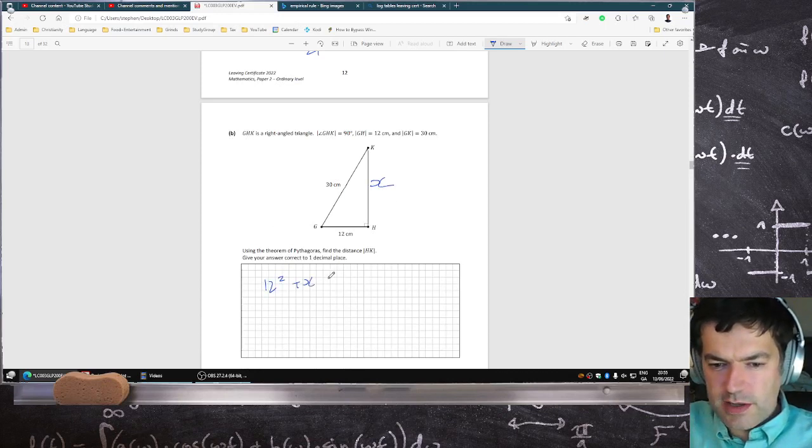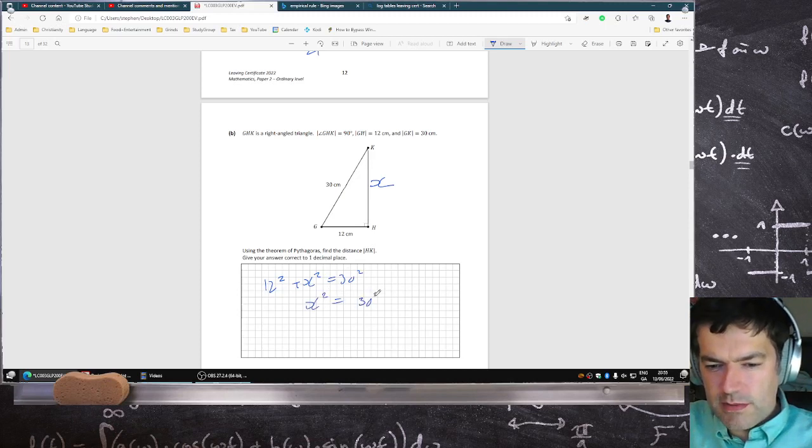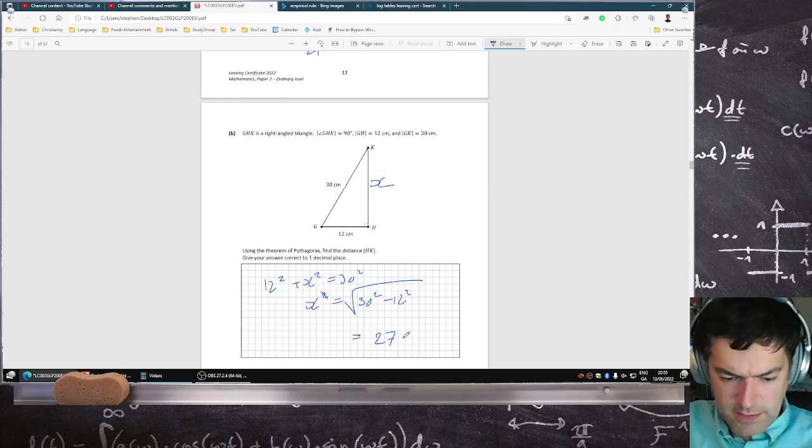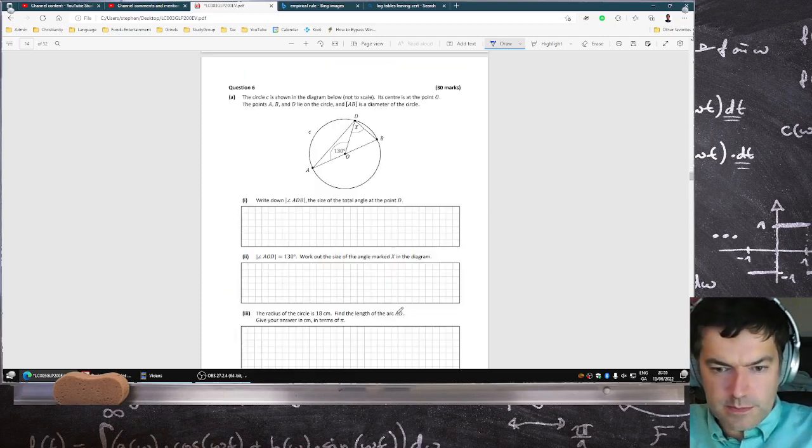...plus x squared equals 30 squared. So x squared equals 30 squared minus 12 squared, so x is the square root of that. To one decimal place is 27.5 centimeters.